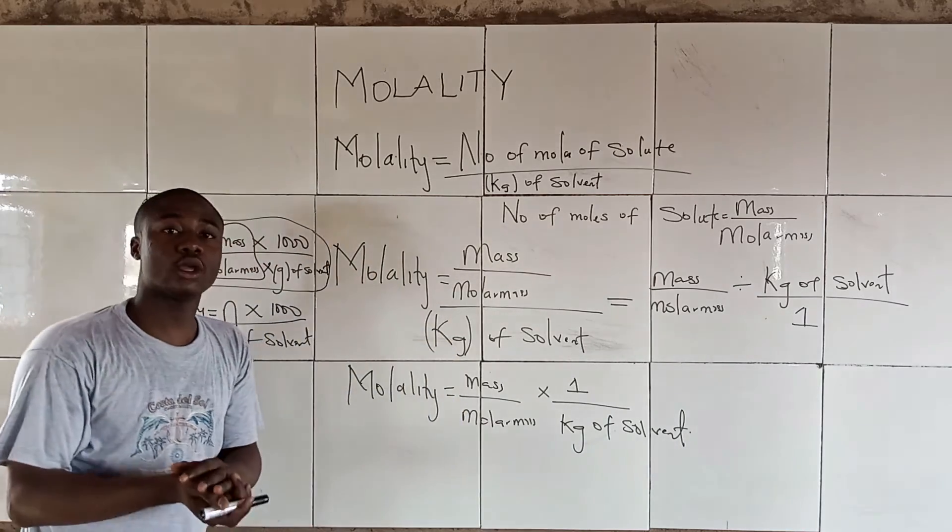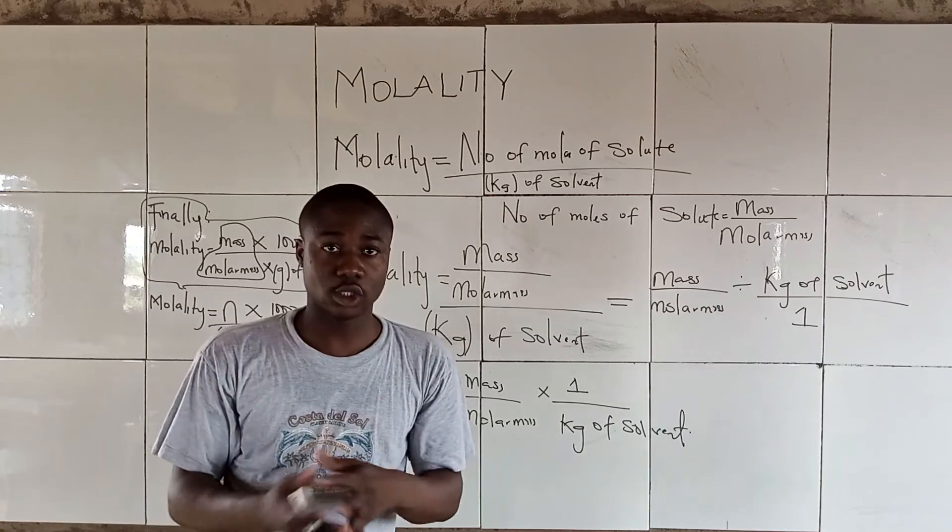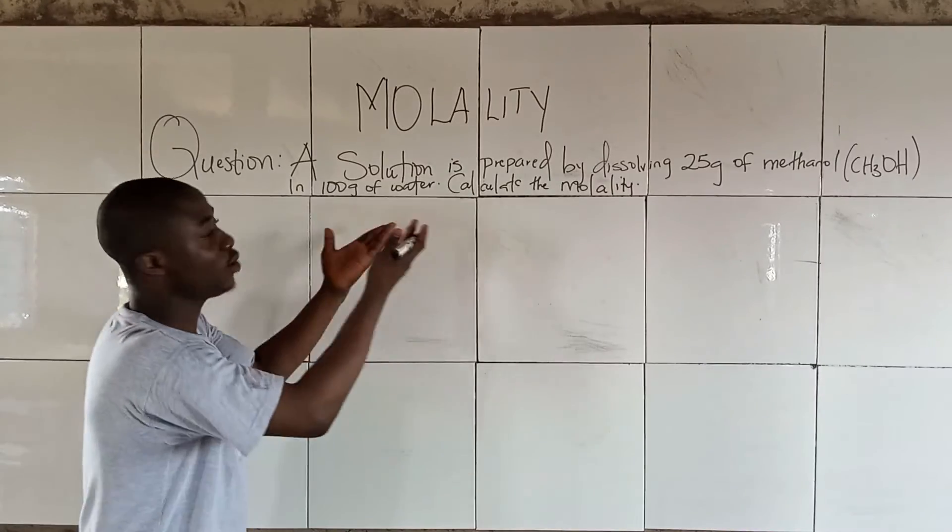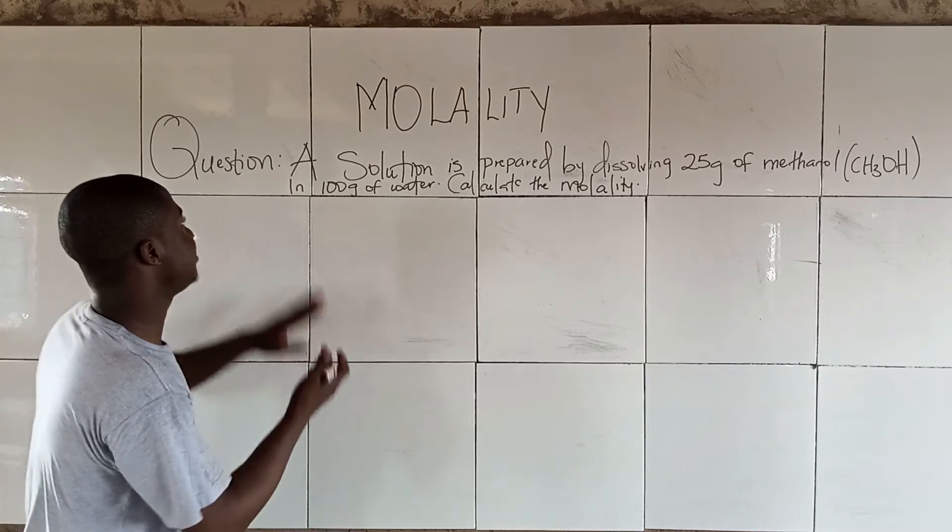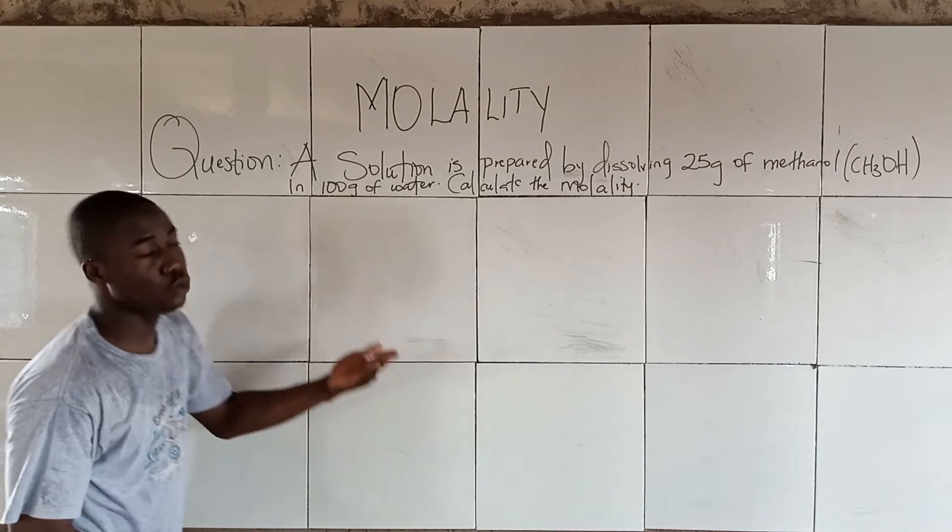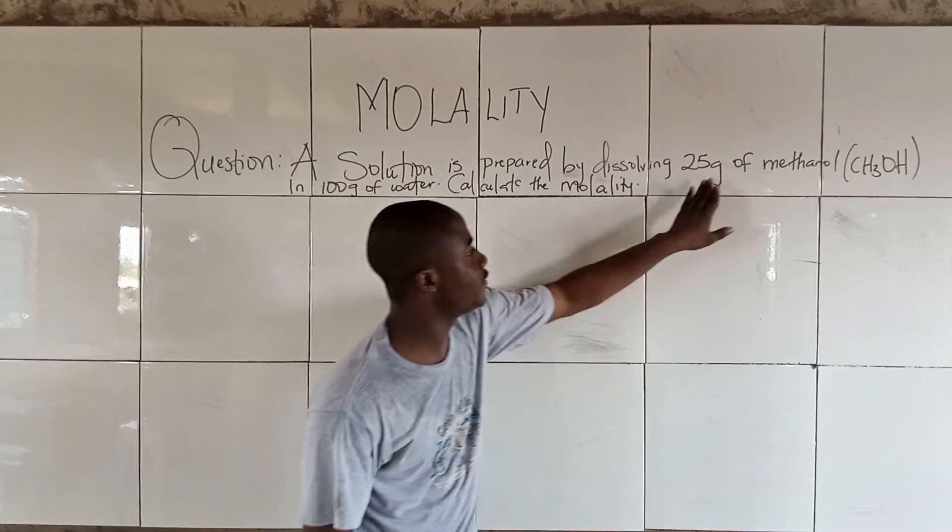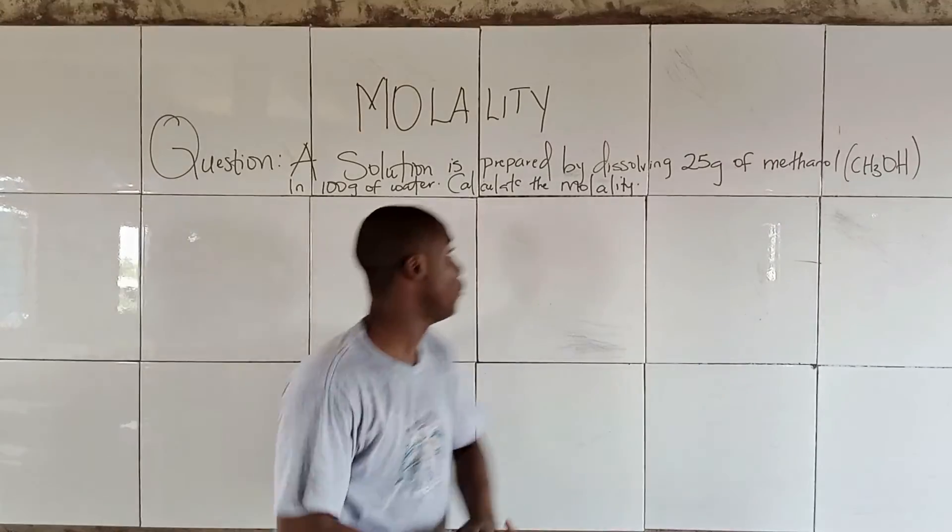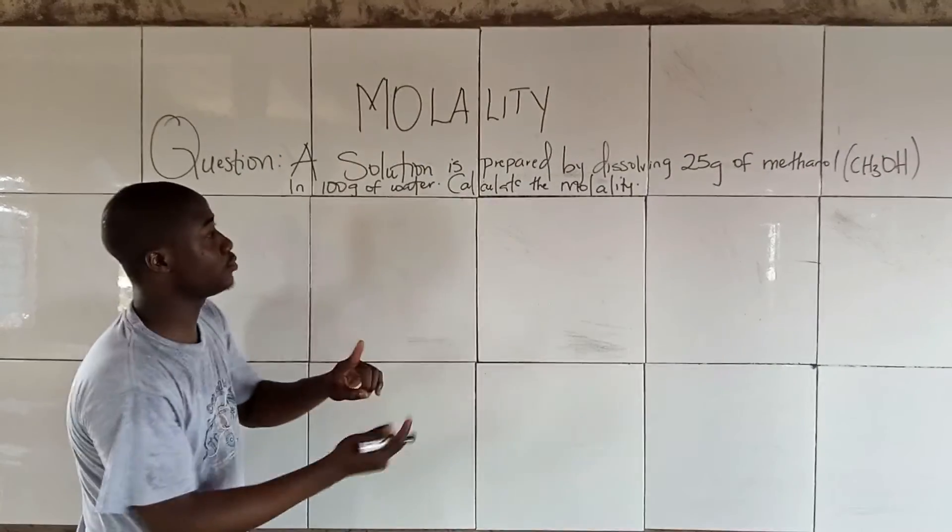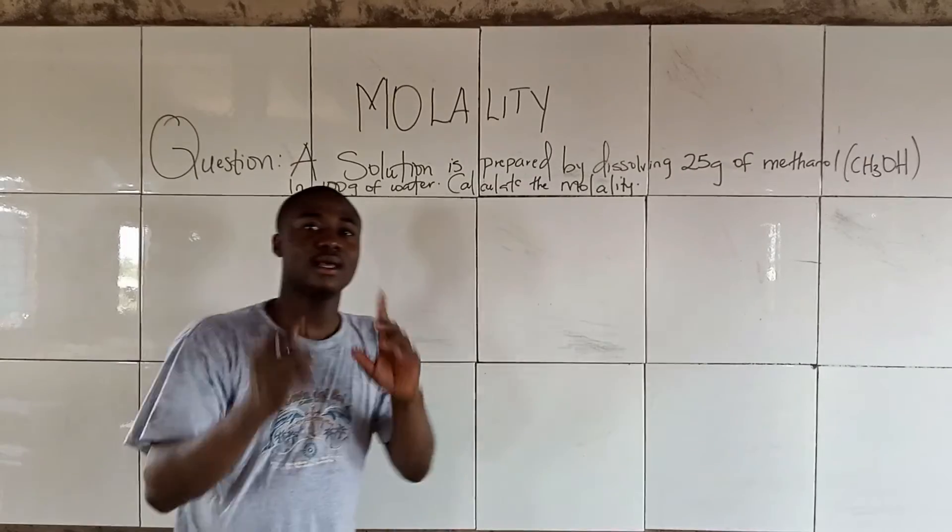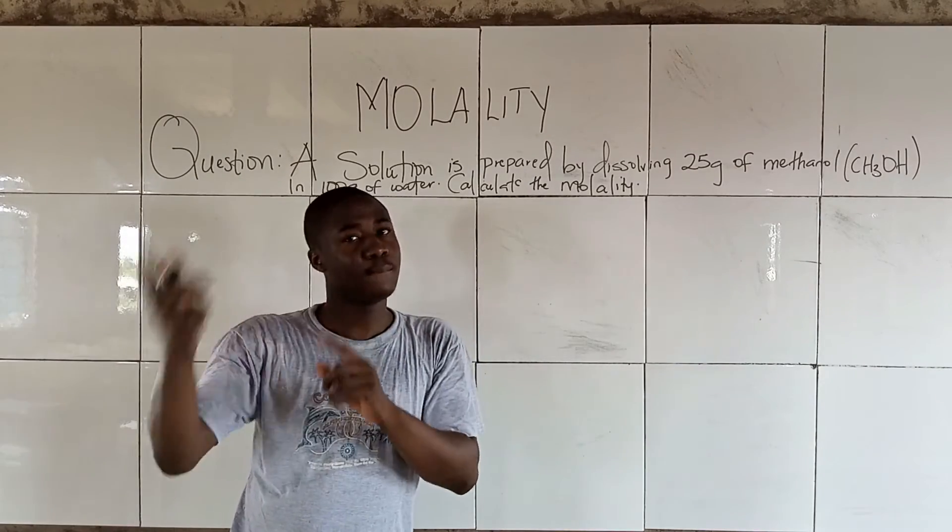Meanwhile, let's talk about the first question. Now, let's begin talking about this question of molality. The question says a solution is prepared by dissolving 25 grams of methanol in 100 grams of water. Now, this says calculate the molality.